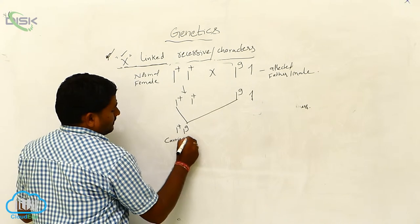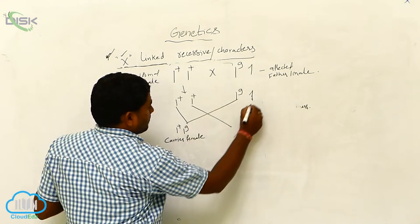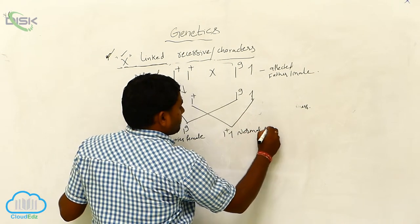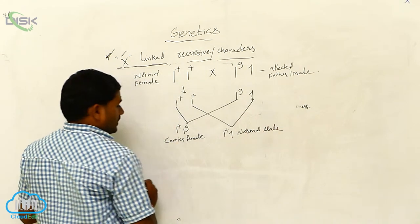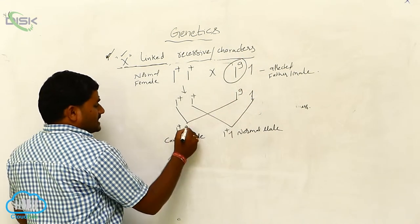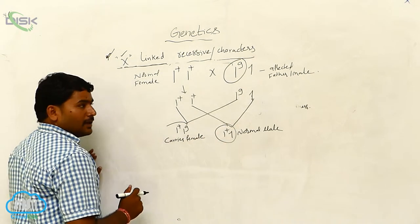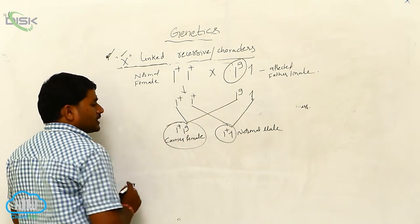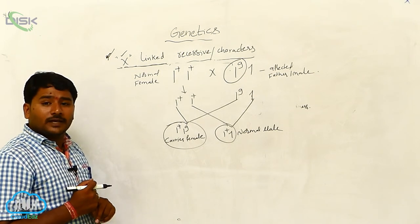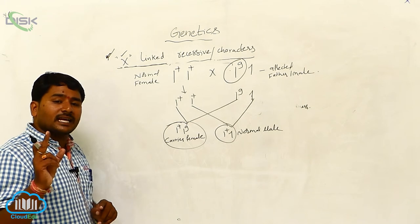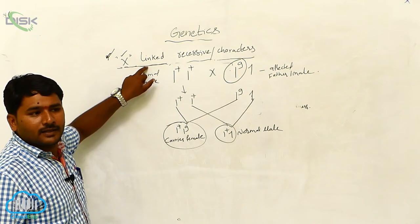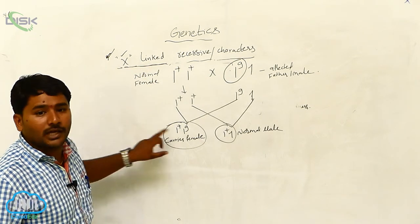She is carrier female. Normal male. The diseased allele expressed in the father is not seen in the male son, because that allele is distributed to the female. I already said: if the father is affected, he will send the character or allele to the daughter only, because it is an X-linked character. Father sends X chromosome to the daughter, not to the son. So, son is normal.